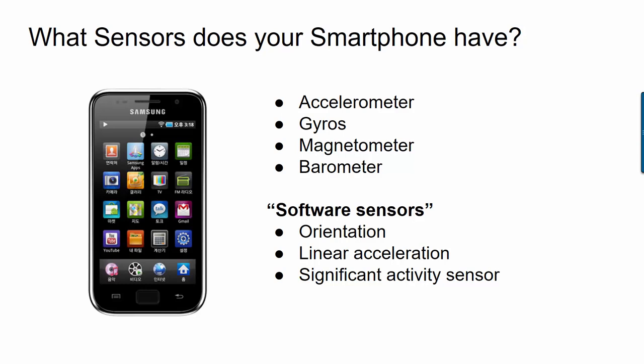For example, one of the listed sensors in my smartphone is a significant activity sensor. The idea here is it would be great if there was a sensor that would tell us if the movement of the phone indicated that I was doing something intentional with it, for example, raising it to look at the screen.